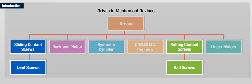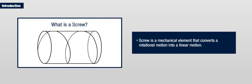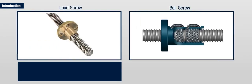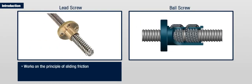Let us turn our attention to the screw. Basically, a screw is a mechanical element that converts a rotational motion into a linear motion. We are aware of lead screws that were used extensively in earlier mechanical equipment for converting rotary motion into linear motion.